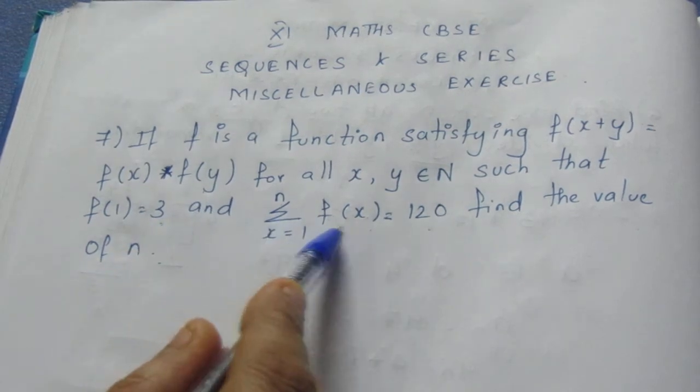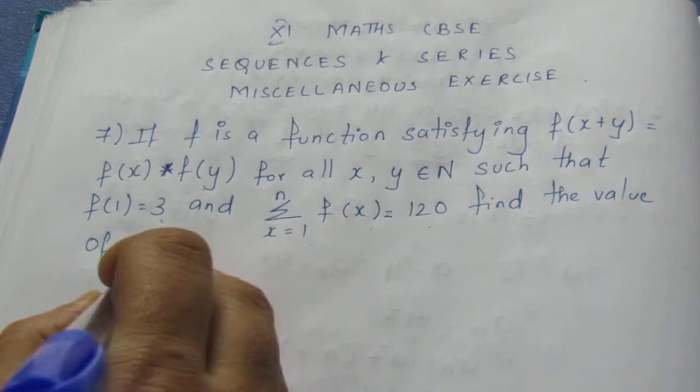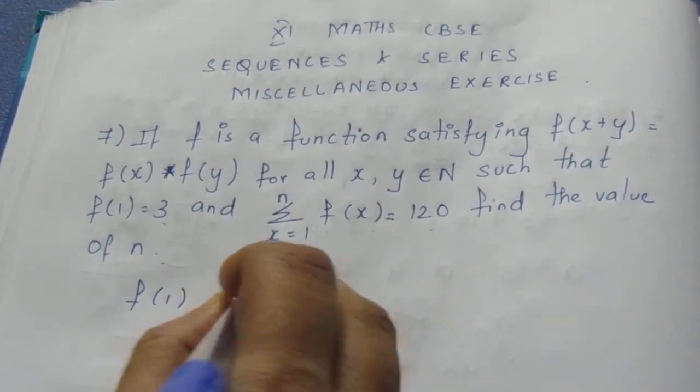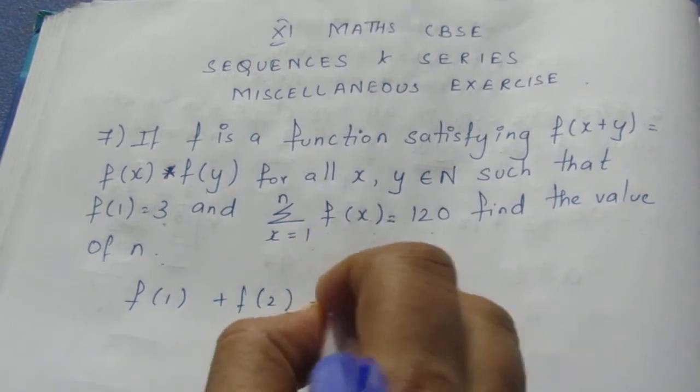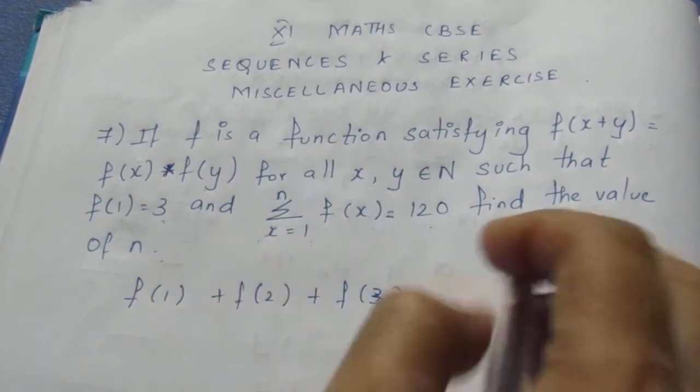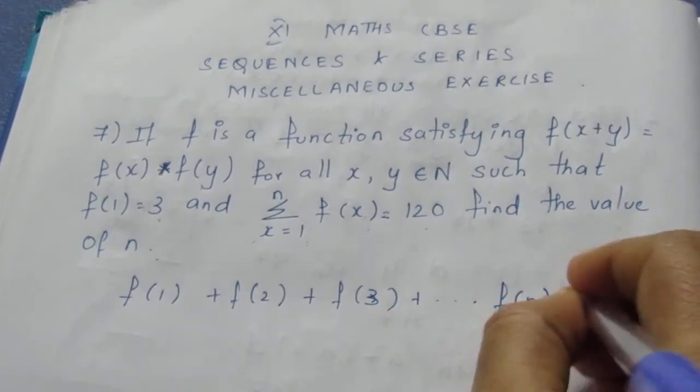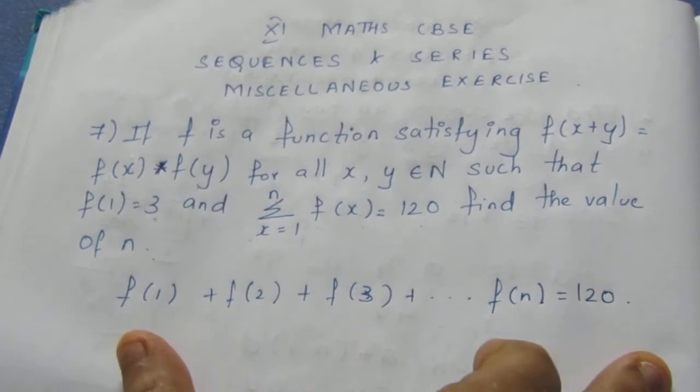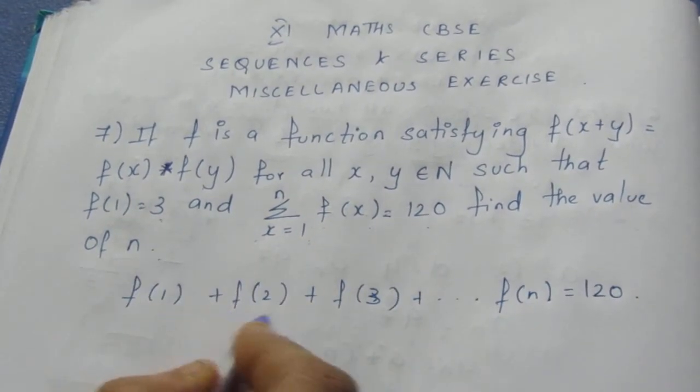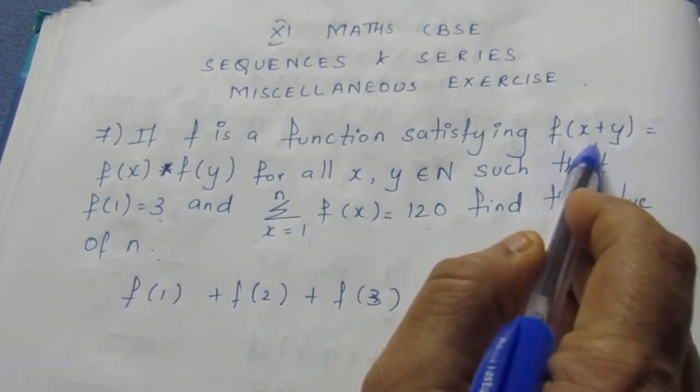We need to find n from the given condition that f(1) plus f(2) plus f(3) (because it starts from x equals 1 till n) up to f(n) equals 120. f(1) is given to be 3. We need to find f(2), f(3), f(4) using this formula.